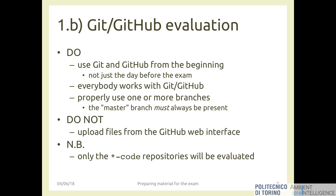Properly use one or more branches. The master branch must always be present — it's the default branch. You can have no other branches or many other branches, but at minimum the master branch must be there and filled with your code. If you do all these things, you can get the maximum amount of points associated with the git and GitHub evaluation.